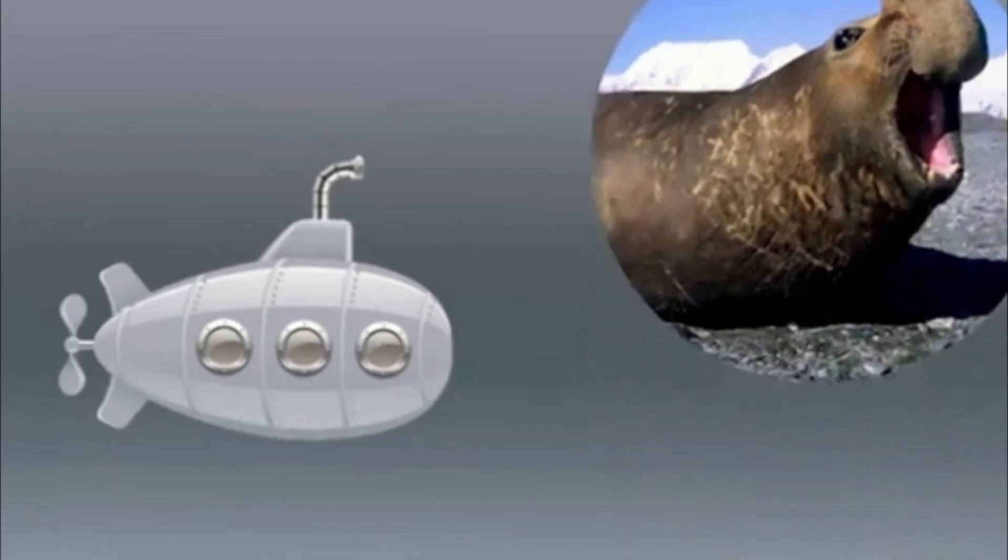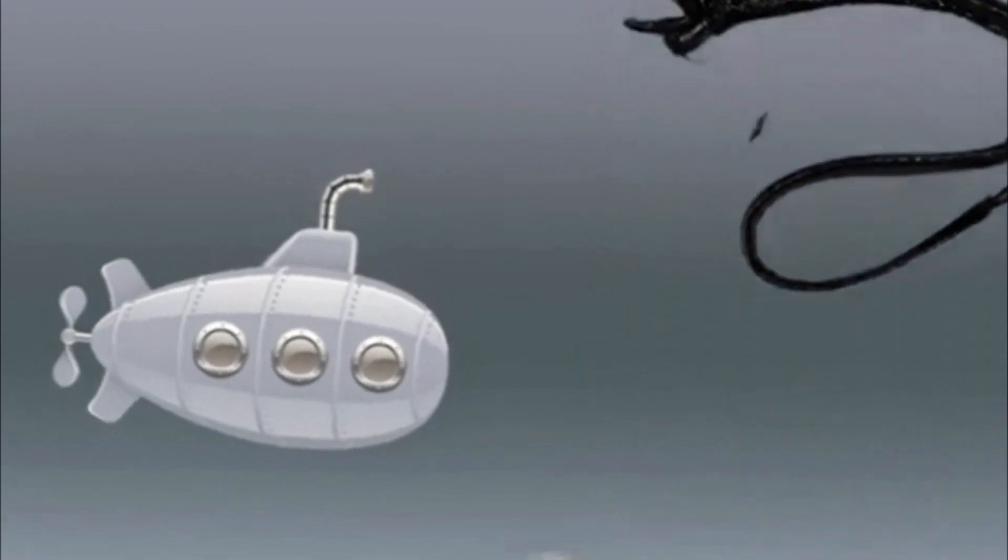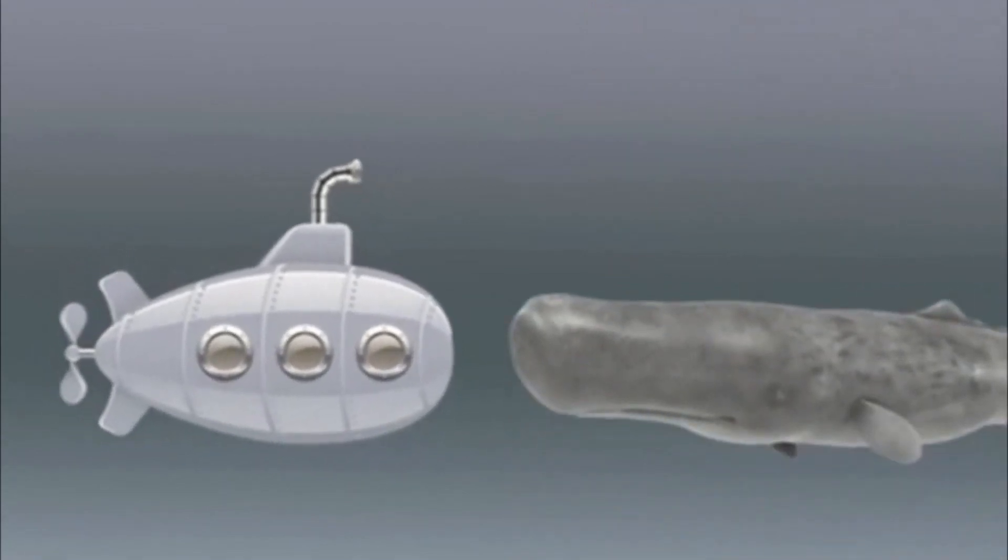At 2,000 meters deep, the anglerfish thrives. It looks like venom. At 2,200 meters, you'll find the habitat of the sperm whale, the largest toothed whale, with lengths of up to 20 meters.